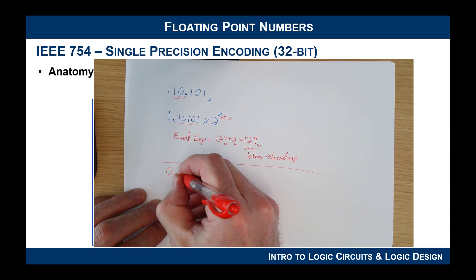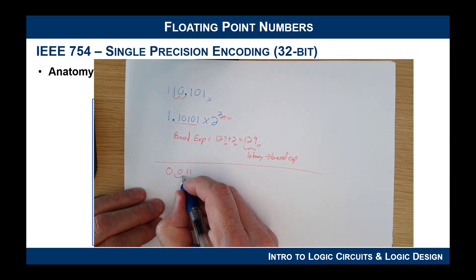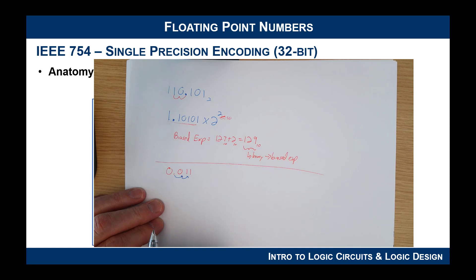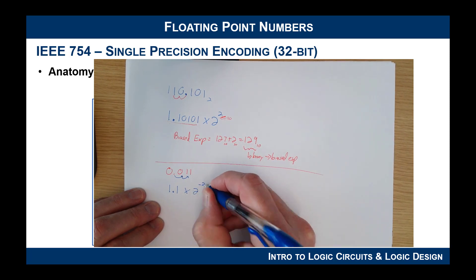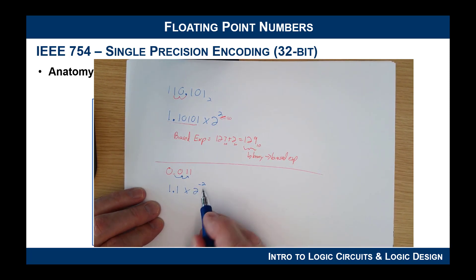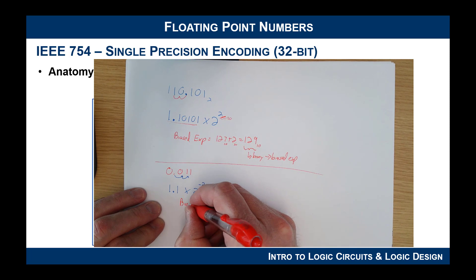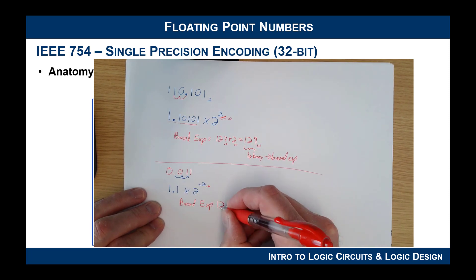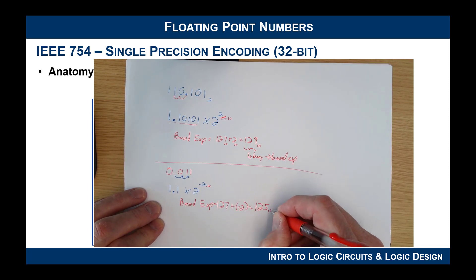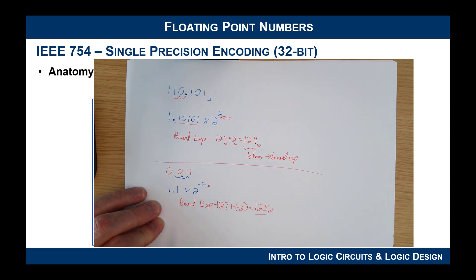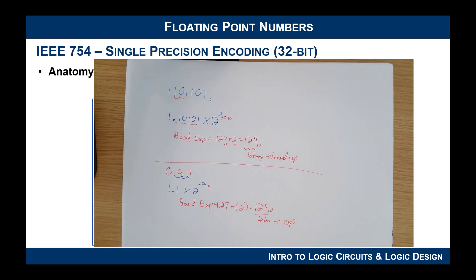Another example: what if you had 0.011? To put this in scientific notation, you move the radix point to the right by 2, giving 1.1 times 2 to the negative 2. The scientific notation exponent is negative 2 in decimal, so the biased exponent would be 127 plus negative 2, which equals 125 in decimal. You then convert that to binary and store it in the exponent bits. That's why it's called the biased exponent — it's strange at first, but advantageous when building circuitry.